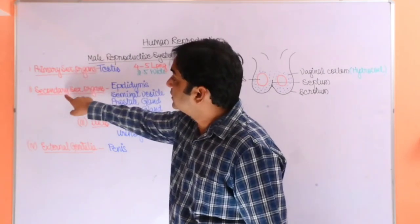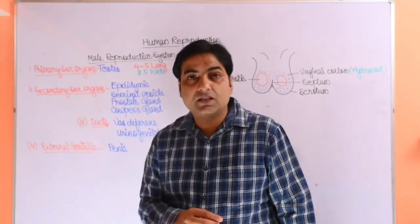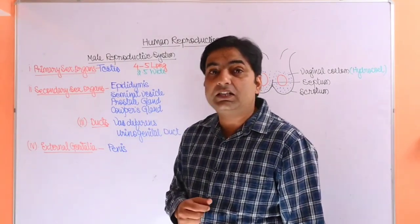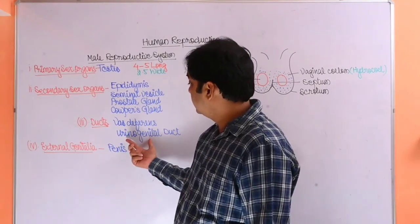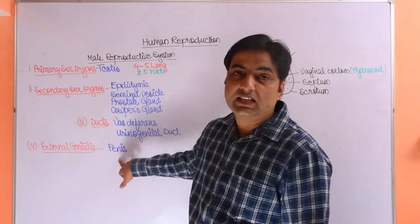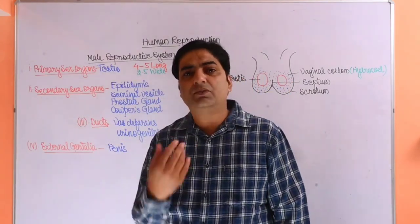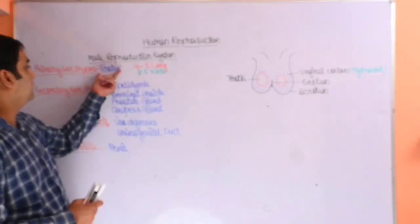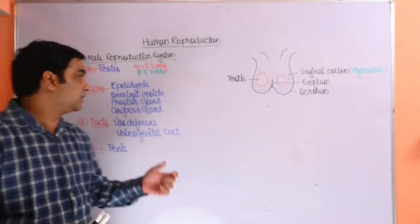The third is urinogenital ducts and vas deferens, the sperm duct. These two are the ducts, and external genitalia, which is penis. Let me introduce all these things first, and afterward I will let you know about testes in brief, then we will discuss female reproductive organ.